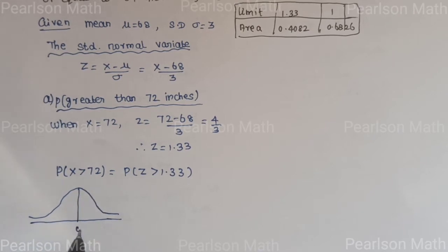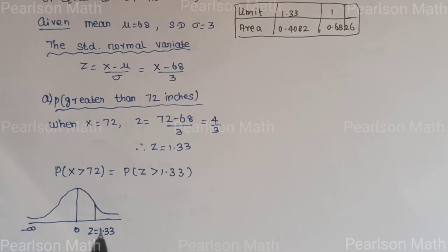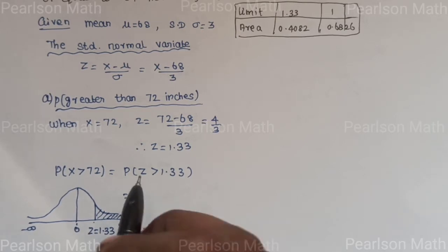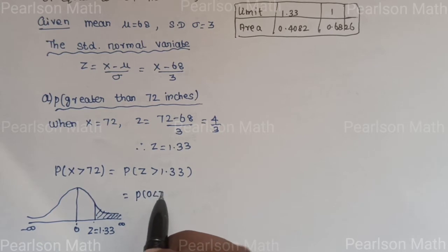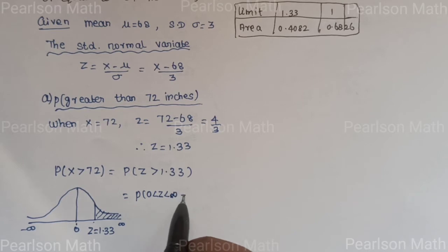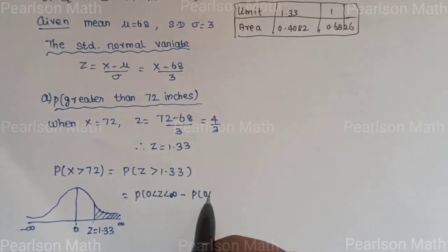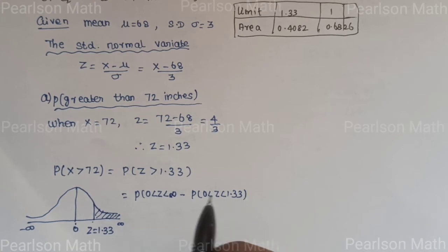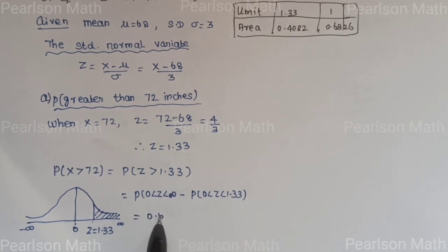On the normal distribution curve, the center is 0, ranging from minus infinity to infinity. The value 1.33 is on the right side. P(Z > 1.33) = P(0 < Z < ∞) − P(0 < Z < 1.33) = 0.5 − 0.4082.